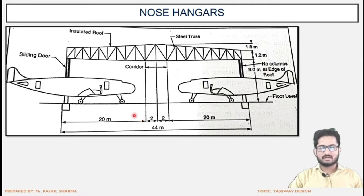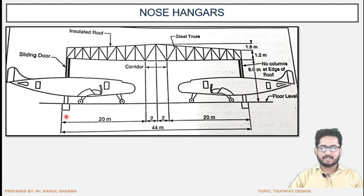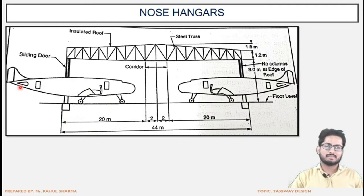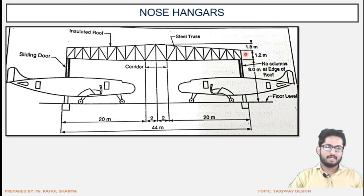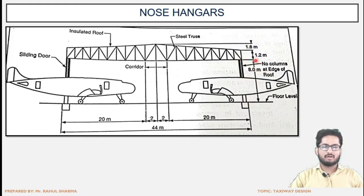The 20 meter dimension is basically the extent to which the aircraft is carried into the structure. The body of the aircraft is termed as fuselage. As we can see, nearly half the portion of the fuselage is carried inside the hangar and the rest remains outside. The clearance gap maintained is shown. 1.2 meter is the height at the end of the truss, 1.8 meter is the difference between the end height and the ground height, and 8 meter is the clear height from the floor level to the bottom of the steel truss.